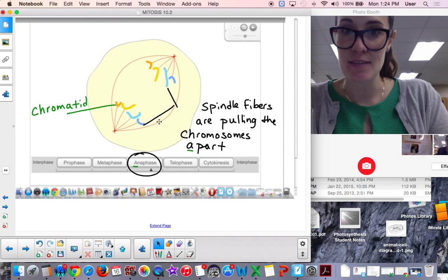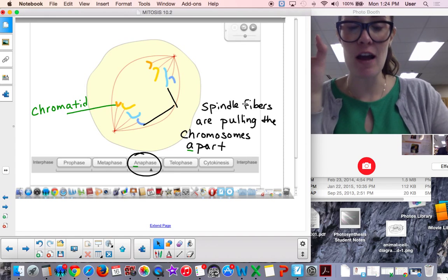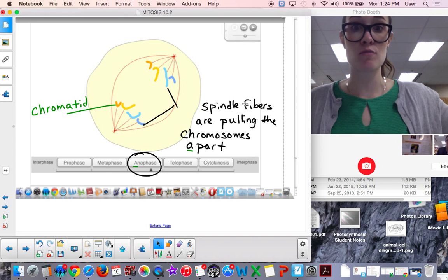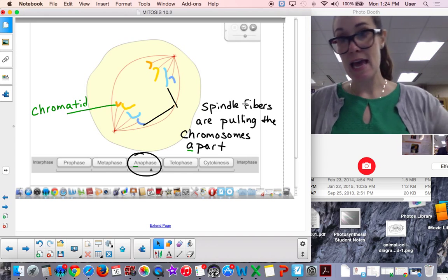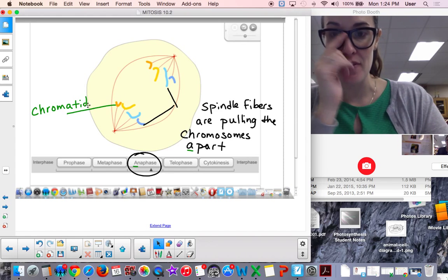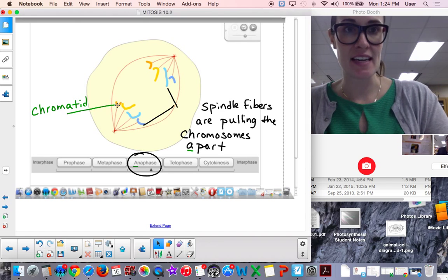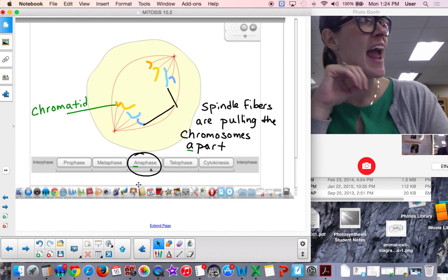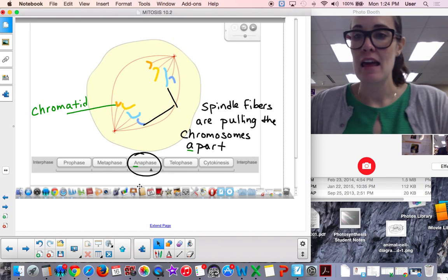Next phase. Anaphase. Write down. The spindle fibers are pulling the chromosomes apart. And now, they're just the legs of those chromosomes. If you remember, they have a name called a chromatid. Make sure you label that. That's anaphase. That's the pulling apart of the chromosomes.